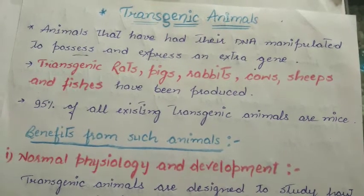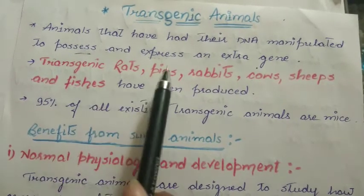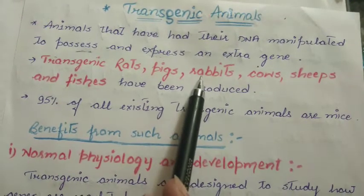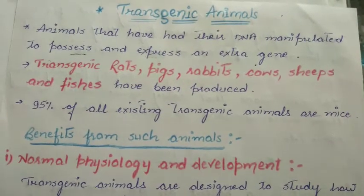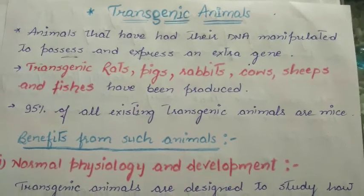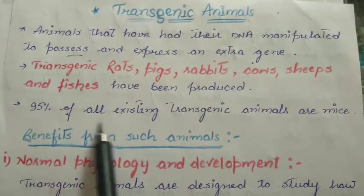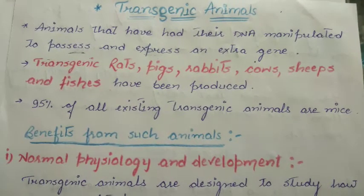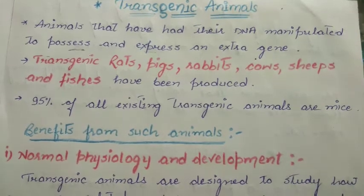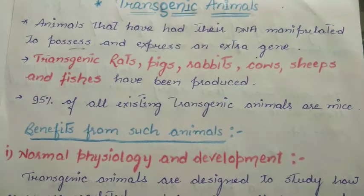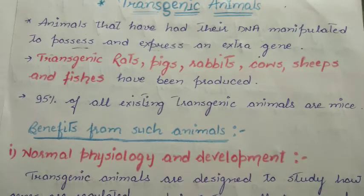The transgenic animals produced so far include transgenic rats, transgenic pigs, transgenic rabbits, cows, sheep, and fishes. The most beneficial transgenic animals are mice. 95% of all existing transgenic animals are mice. Why? Because mice physiology and anatomy almost resemble that of human beings.